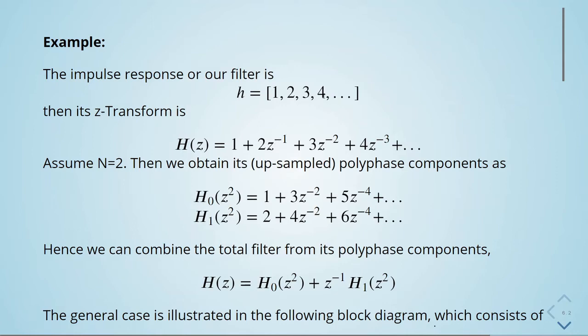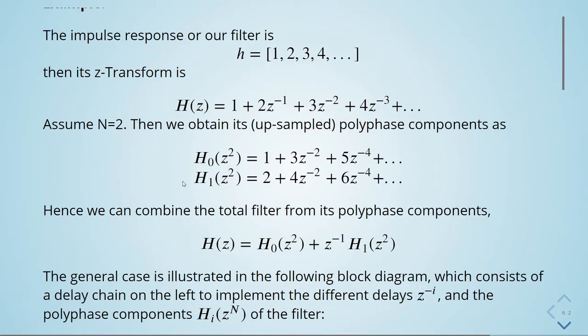When we assume a sampling factor N equals 2, we can obtain its up-sampled polyphase components given by this. Here is phase zero and phase one. We have 1, 3, 5 and so on, and with phase one is 2, 4, 6 and so on.